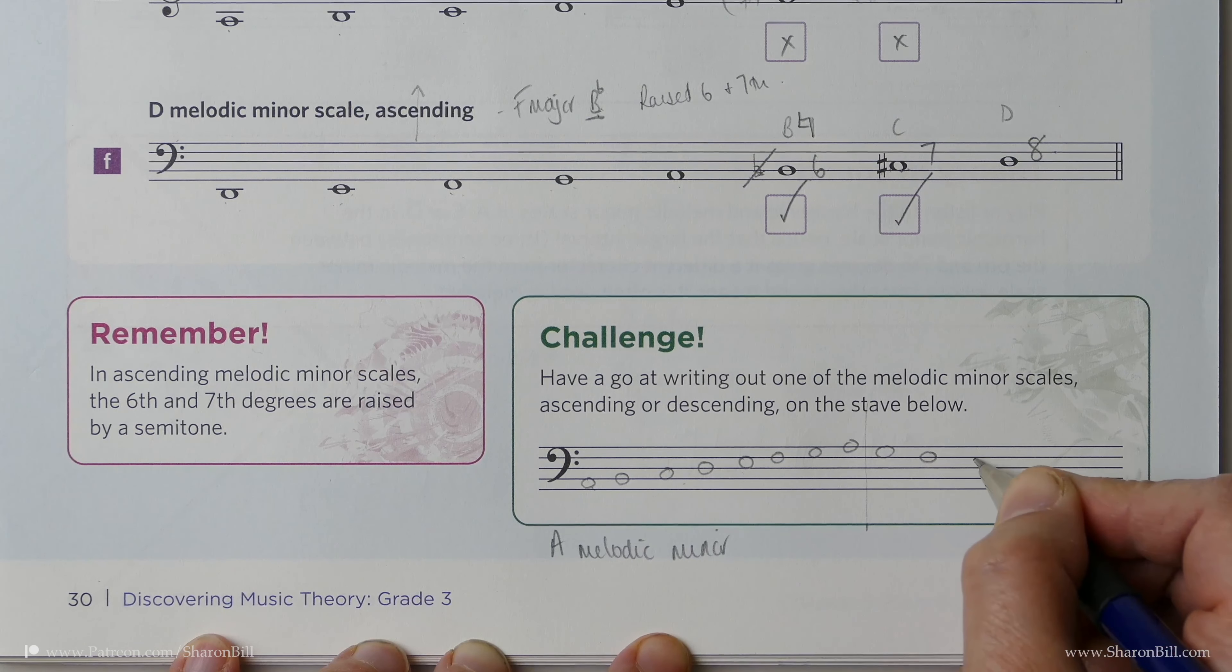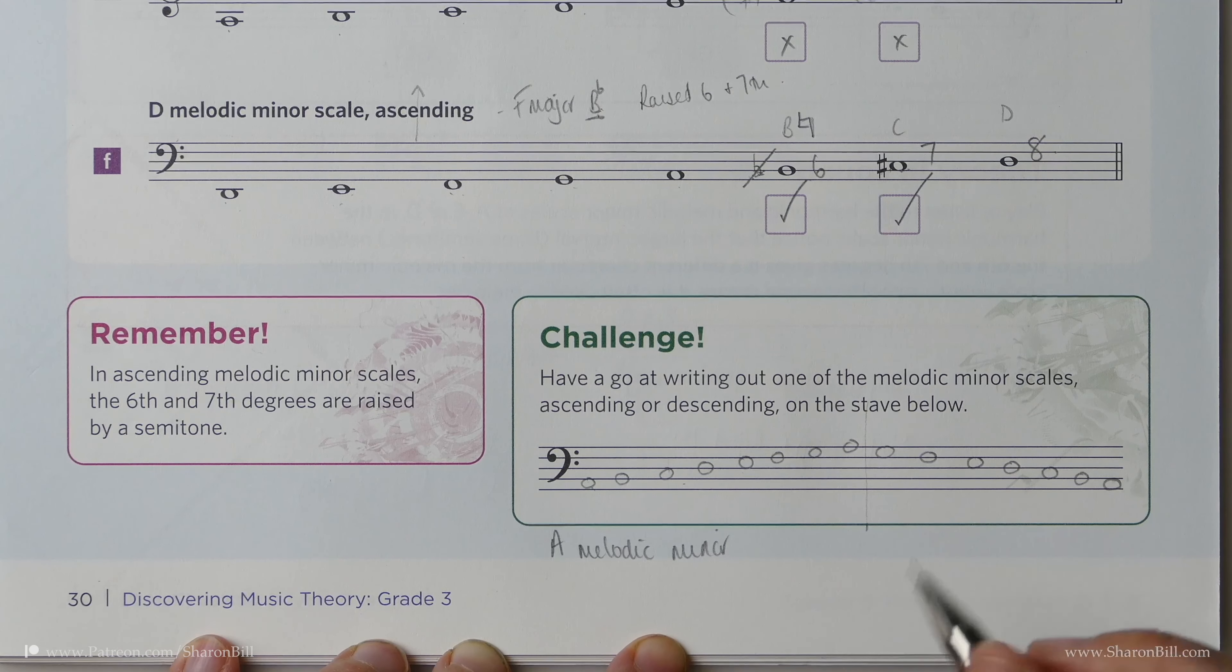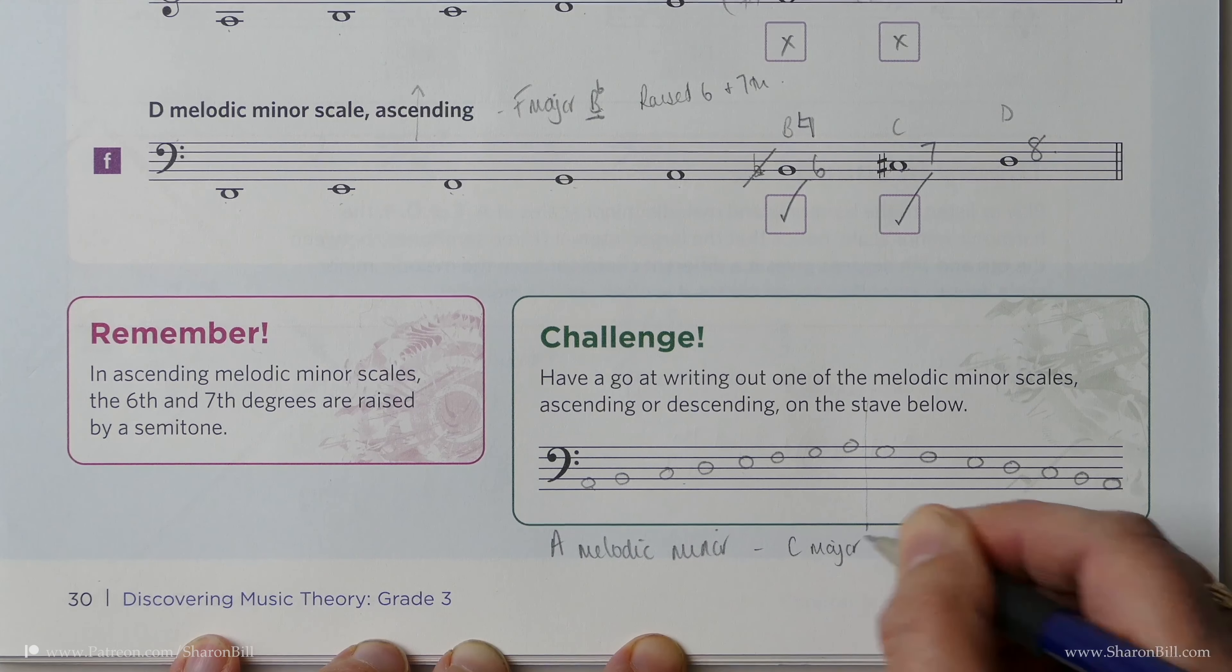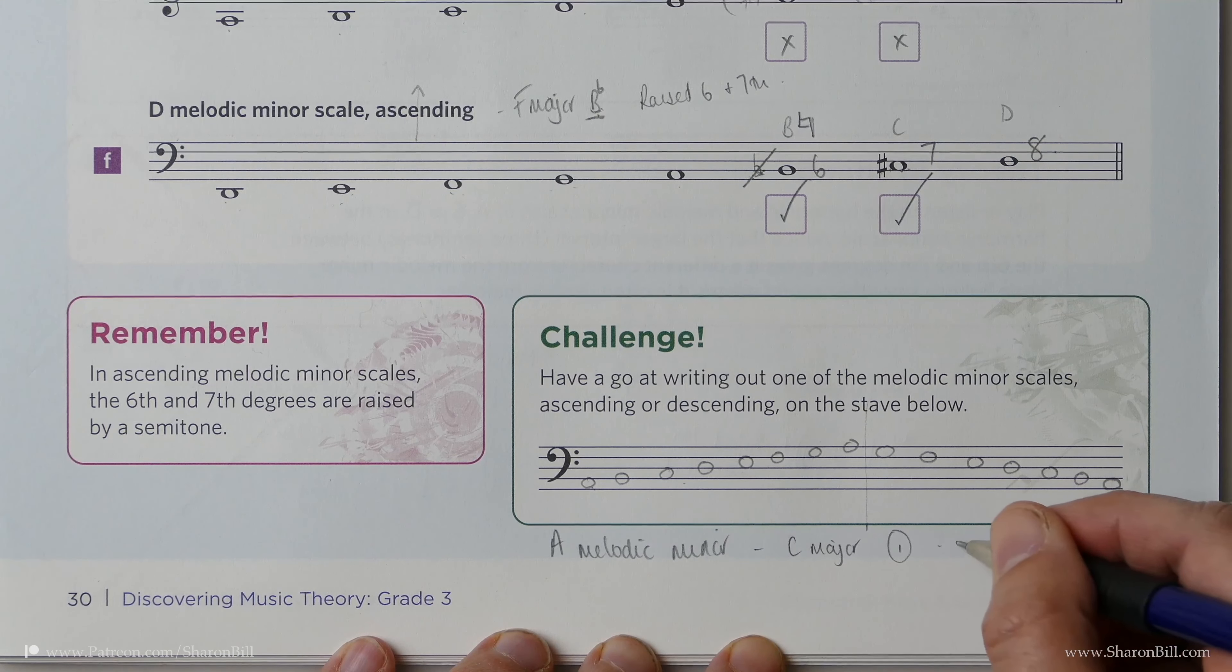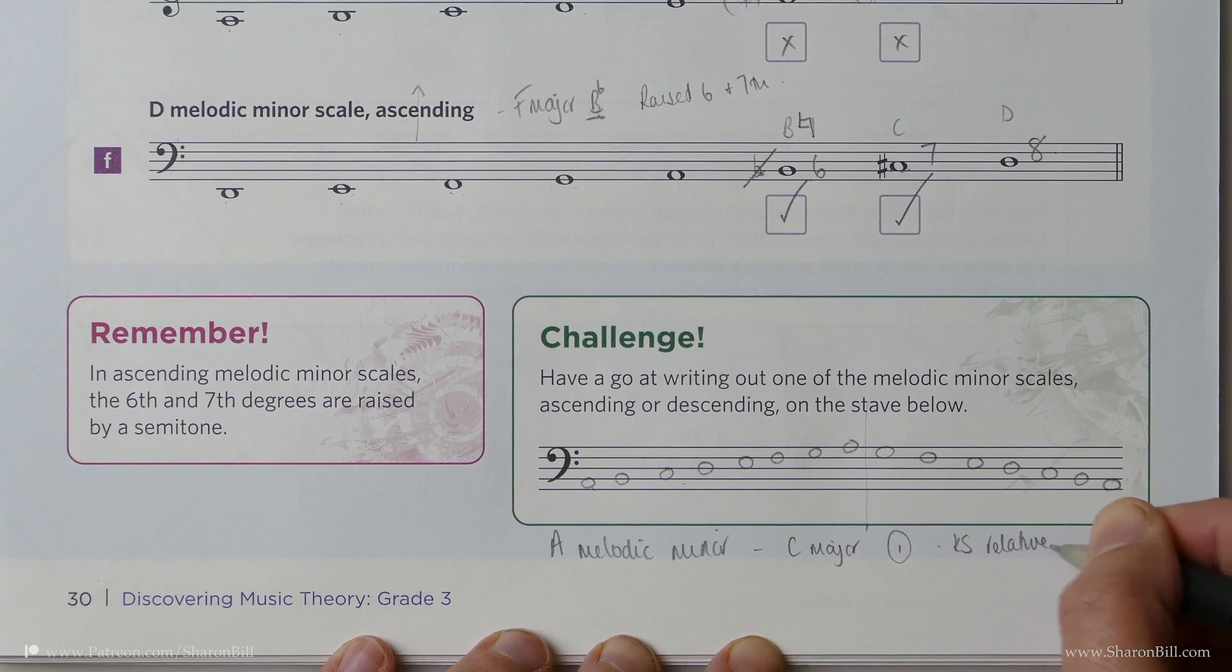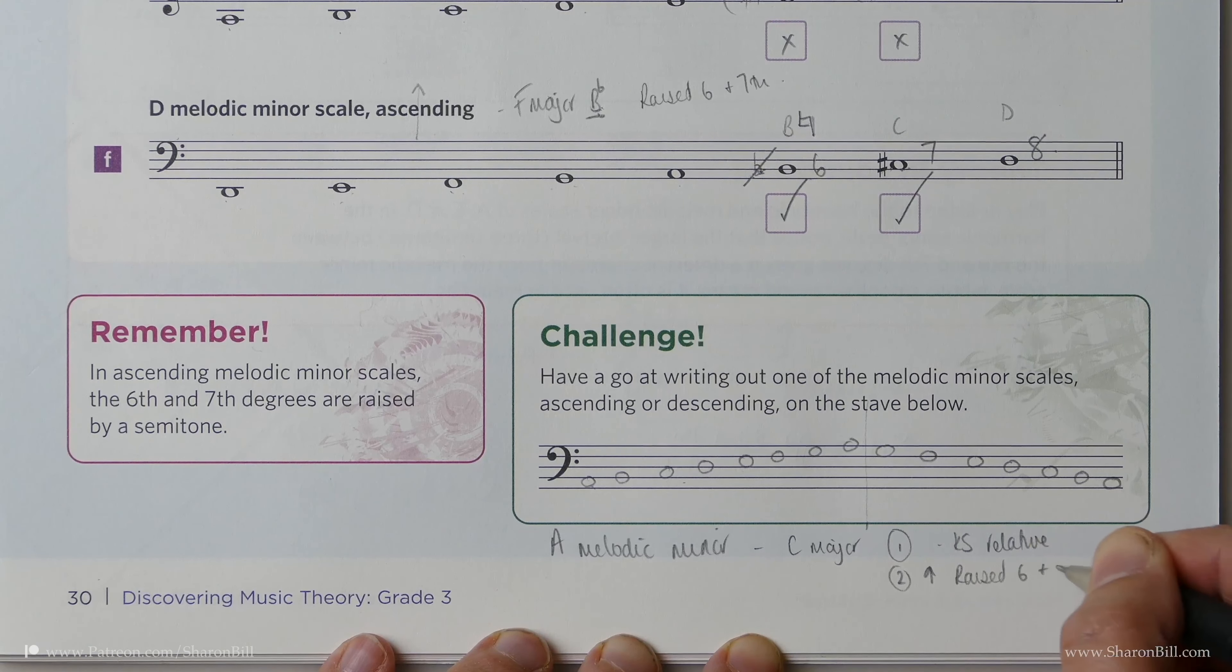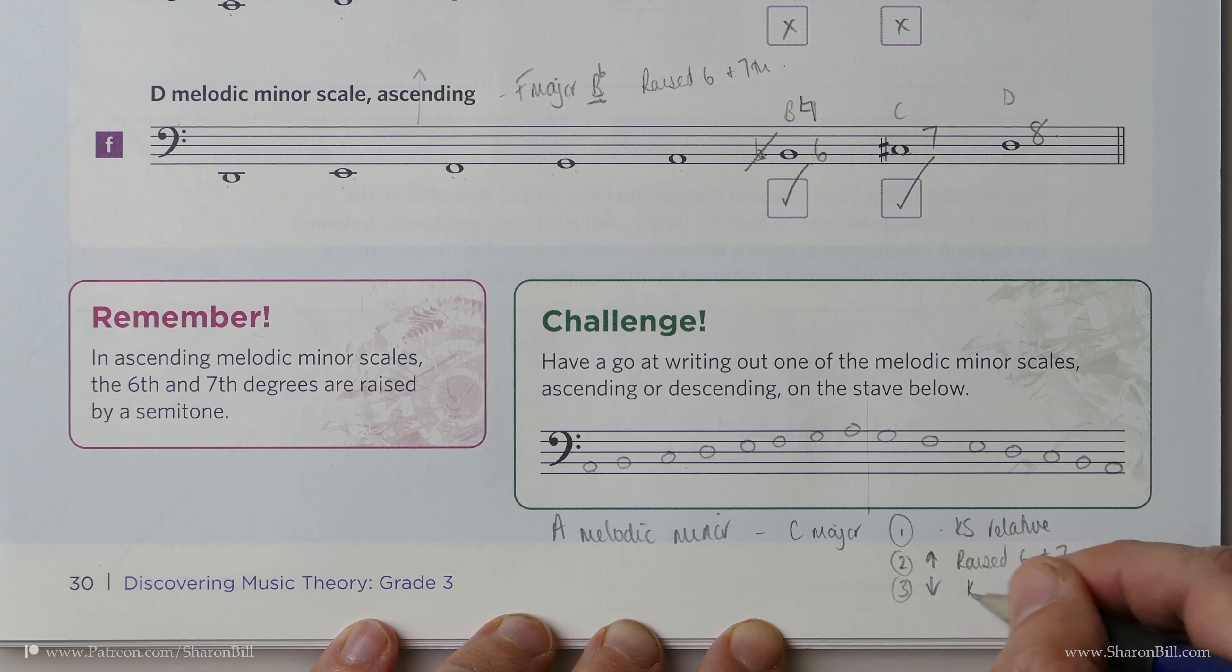And if I come back down, we're going space, line, space, line, space, just about fit that on. Now A minor is related to C major, which has no sharps or flats. So Step 1 is key signature of C major. Step 2, going upwards, is the raised sixth and seventh. And then because I'm going to do both, descending is the key signature only again.